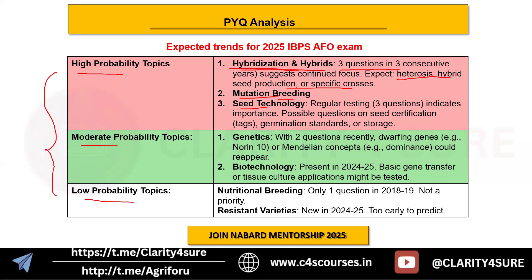For mutation breeding — a staple with consistent appearance — likely areas include mutagens, mutation types, or varieties like Pusa Nanha. For seed technology, three questions asked indicates prime importance, with possible questions on seed certification tags, germination standards, or storage.